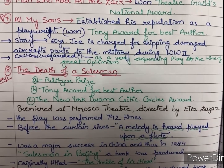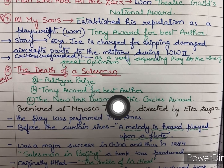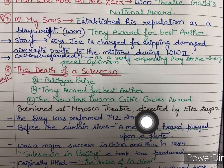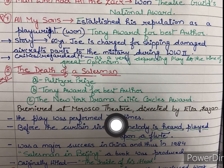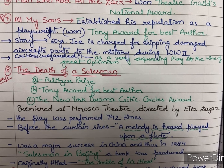Eighth work is The Death of a Salesman — this work is also very important, isko bhi aap details se study kijiye. For this work he won the Pulitzer Prize, Tony Award for Best Author, and The New York Drama Critics' Circle Award. The play was premiered at the Morosco Theater, directed by Elia Kazan, and was performed 742 times. A special feature of this play was that before the curtain rises, a melody is heard played upon a flute.